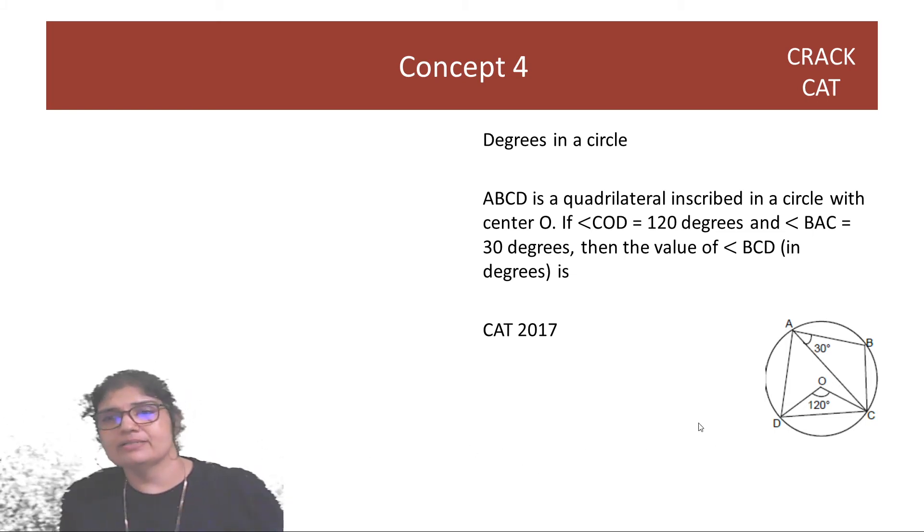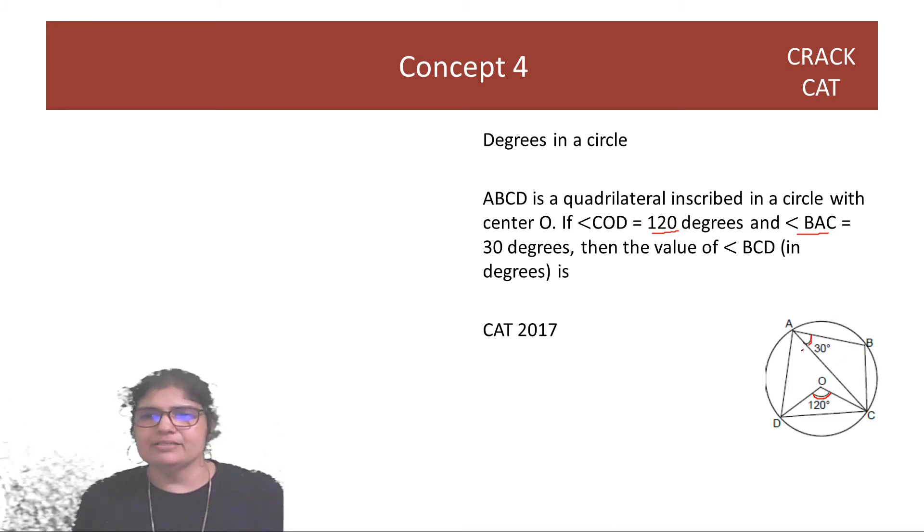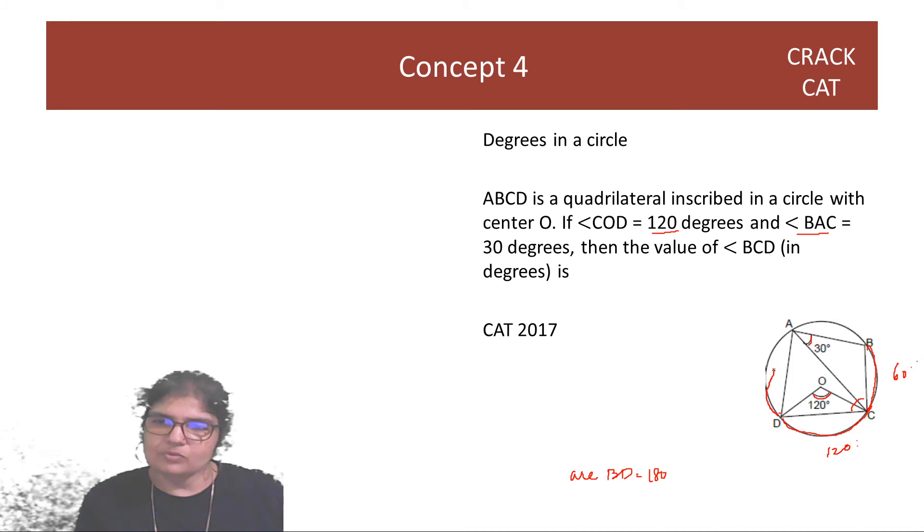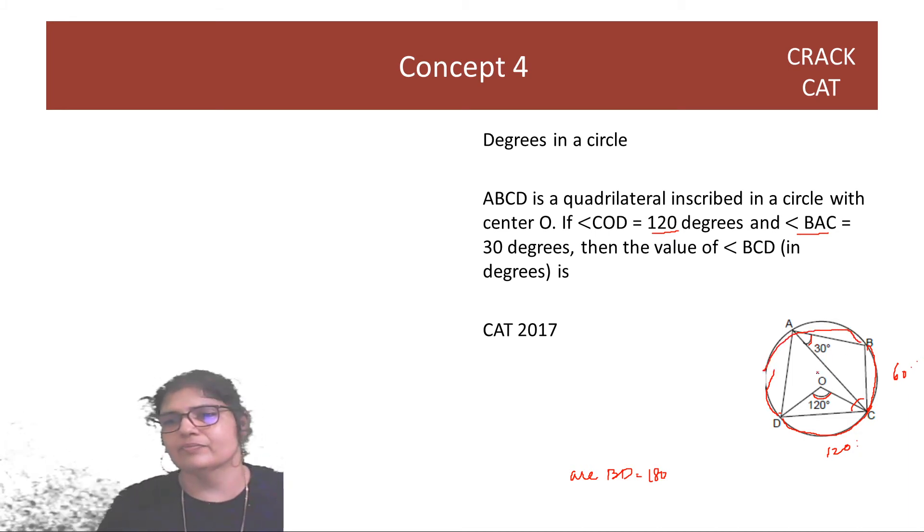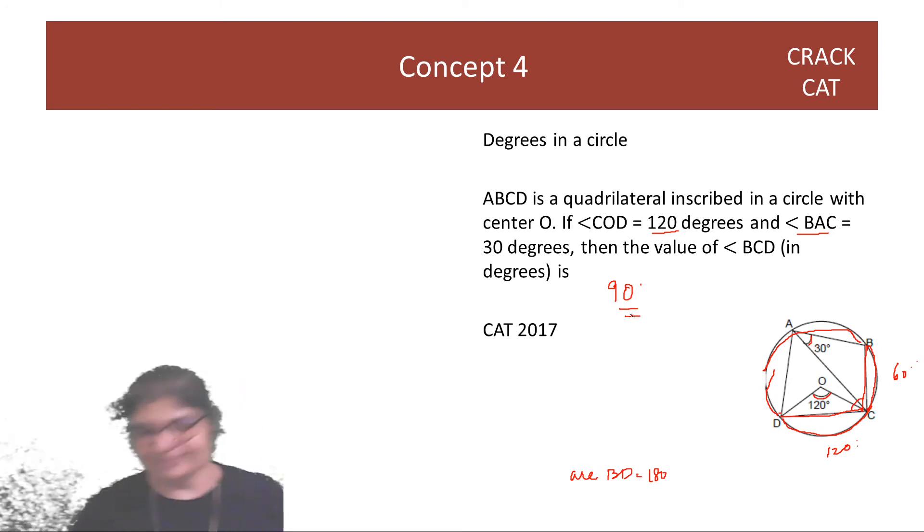A, B, C, D is a quadrilateral inscribed in a circle with center O. If angle COD is 120 degrees and angle BAC is 30 degrees, so COD is 120 degrees and the value of BCD, we want this value is how much? So if this is 30, it means this is 60 degrees. This is 120 degrees, so this is exactly 120 degrees. 60, 120. So this is 180. Arc BD is 180. So the remaining arc, that also will be 180 because the full thing is 360. So BCD is inscribed within that. So BCD will be 90 degrees. That's the answer.